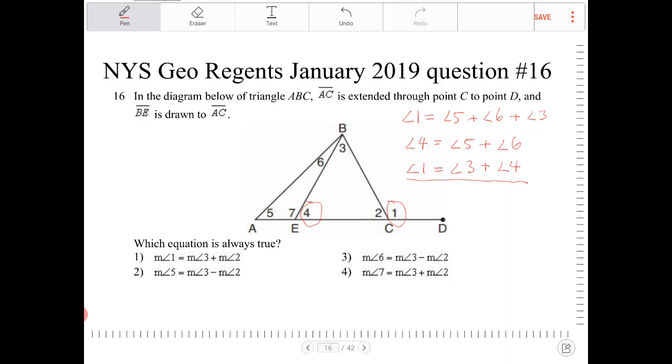Anyway, let's take a look at some of the options here. Which equation is always true? So angle 1 is equal to angle 3 plus angle 2? Is that the case? 3 plus 2, that is not true.